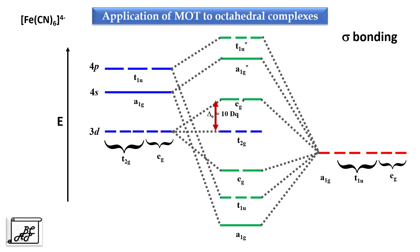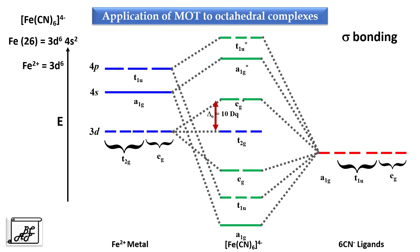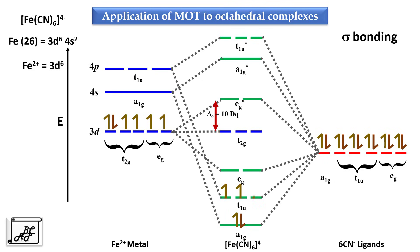The next example is [Fe(CN)₆]⁴⁻. Fe has atomic number 26 and outermost electronic configuration 3d⁶ 4s². Iron is in the +2 oxidation state, so the outermost electronic configuration becomes 3d⁶. On the left hand side we have Fe²⁺ metal, on the right hand side 6 cyanide ligands, and at the center the molecular orbitals for [Fe(CN)₆]⁴⁻. Fe²⁺ has 6 electrons in its 3d orbitals, and each ligand donates a pair of electrons, giving 12 electrons total in the ligand symmetry orbitals. As the ligands are more electronegative, the 12 electrons from the 6 cyanide ligands occupy the lower bonding molecular orbitals.